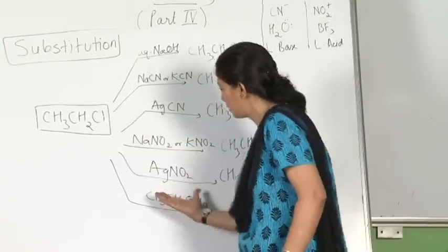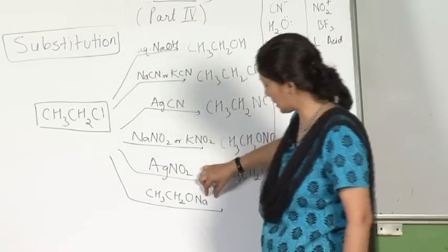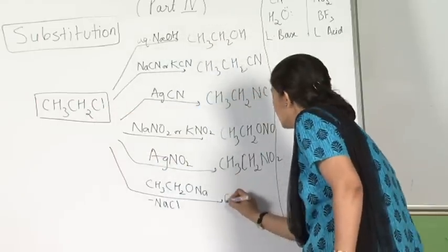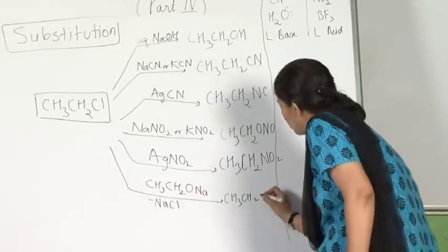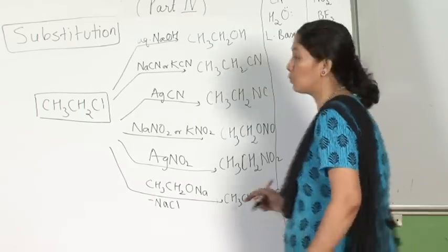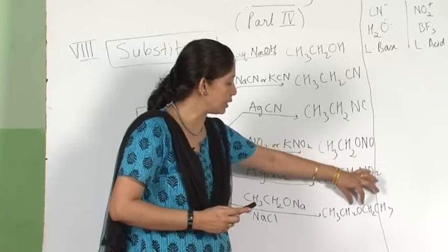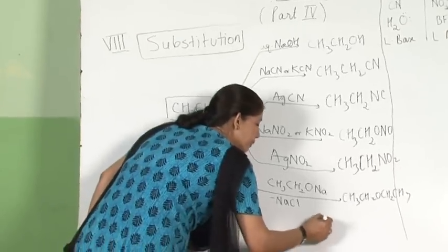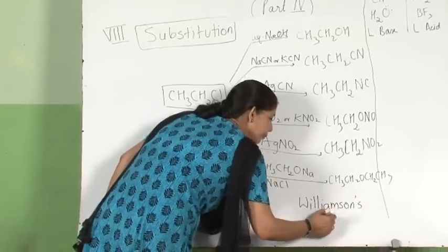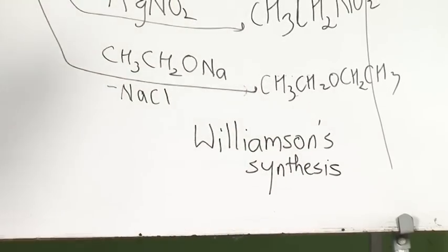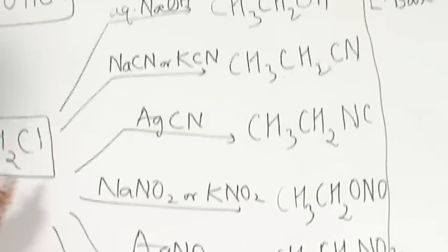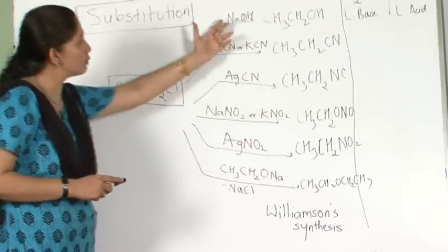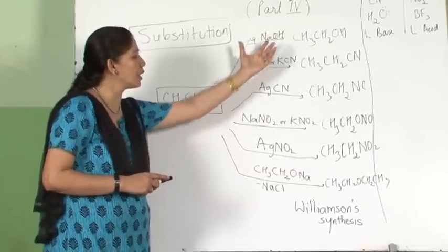Try the last reaction: CH3CH2Cl reacts with sodium ethoxide (CH3CH2ONa). Combining the opposite parts — Cl with Na gives NaCl as byproduct — what is left is CH3CH2-O-CH3CH2, an ether (oxygen attached to carbon on both sides). This is Williamson synthesis. When an alkyl halide reacts with sodium alkoxide, ethers are formed. Just attach the nucleophile and find the byproduct.